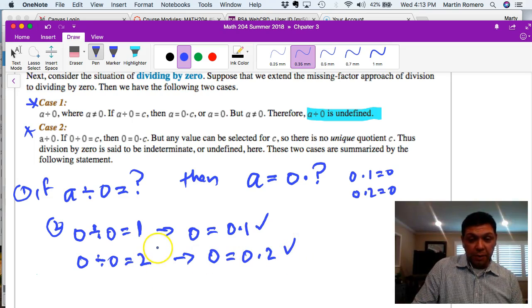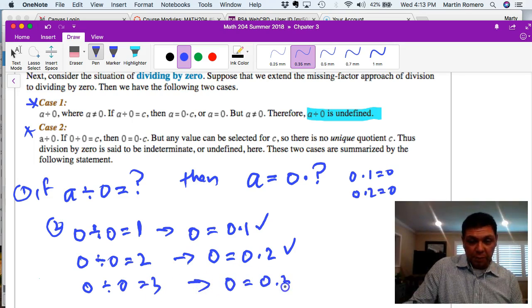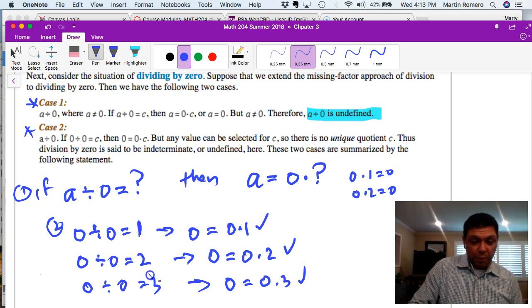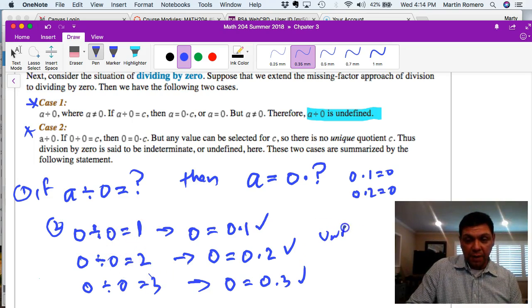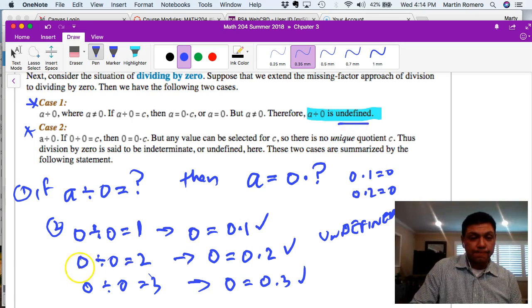But then zero divided by zero can't be two and it can't be one. If it equals three, then this has to be true and it is. So because we have multiple answers here - zero divided by zero equals one, two, three - we call it undefined. Anything divided by zero is undefined. That's it.